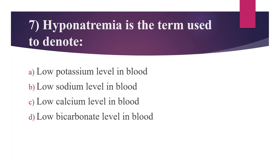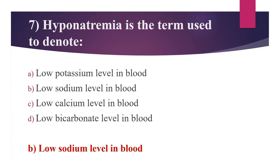Seventh Question: Hyponatremia is the term used to denote. Option A: Low potassium level in blood. Option B: Low sodium level in blood. Option C: Low calcium level in blood. Option D: Low bicarbonate level in blood. Answer is Option B, Low sodium level in blood. Hypo means low; sodium's Latin name is natrium, hence hyponatremia. Low potassium is hypokalemia; low calcium is hypocalcemia.